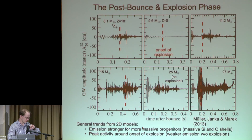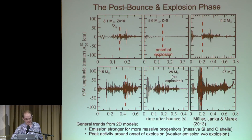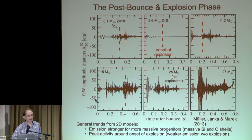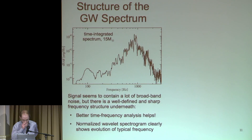Looking at a few representative gravitational wave amplitudes from 2D simulations, you already see a few trends. Gravitational wave emission tends to become a bit stronger for more massive progenitors, because they have more mass in the region between the neutron star and the shock — heated by neutrinos — where hydrodynamical instabilities like convection can develop. The gravitational wave signal also tends to peak in activity around the time when the explosion develops, because at that time the mass involved in convection reaches its maximum. Afterwards, convective instabilities tend to freeze out and you're left with only radial motions.